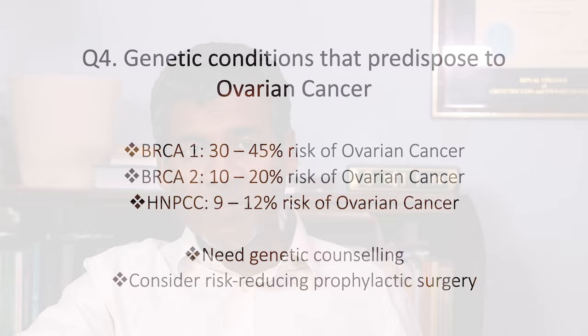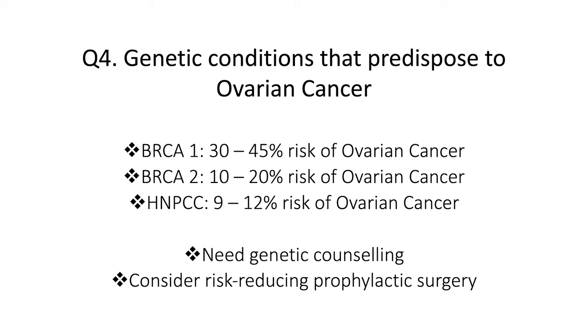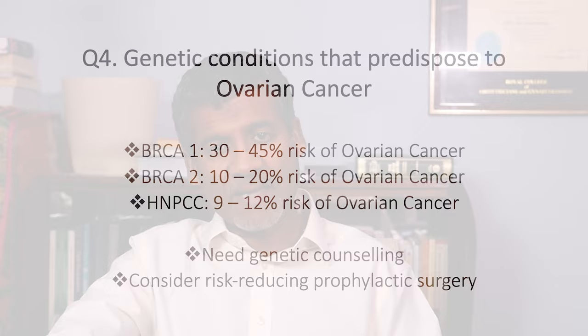Question 4: What are the genetic conditions that predispose a woman to ovarian cancer? There are three conditions to be aware of. First, BRCA1, which confers a 30 to 45% risk of ovarian cancer. Second, BRCA2, which confers a 10 to 20% risk. Third, HNPCC — hereditary non-polyposis colon cancer syndrome, also known as Lynch syndrome — which confers about a 9 to 12% risk. Women with these genetic predispositions should be referred for genetic counselling and should consider risk-reducing prophylactic surgery once they have completed their family.